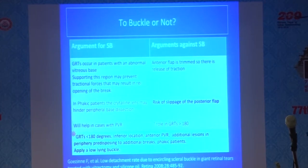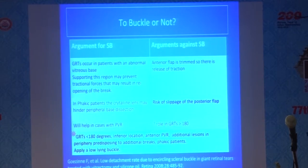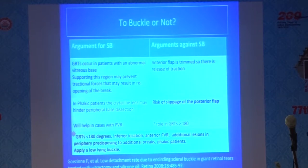So when do you apply a buckle? If the tear extends less than 180 degrees, is inferior in location, is associated with anterior PVR, or there are additional peripheral lesions predisposing to additional breaks, and in phakic patients where you may not be satisfied with peripheral vitreous base dissection. The key point is to apply a low-lying buckle — do not indent too high — as that will prevent slippage of the posterior flap.